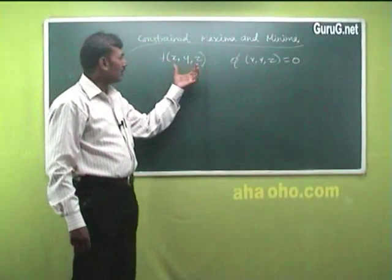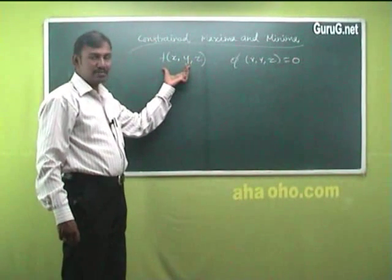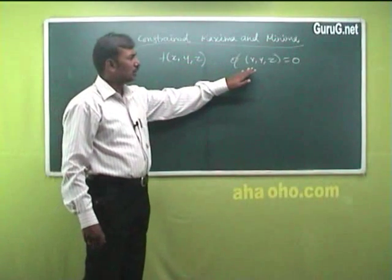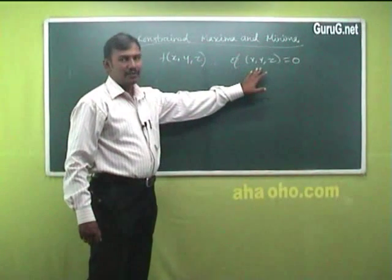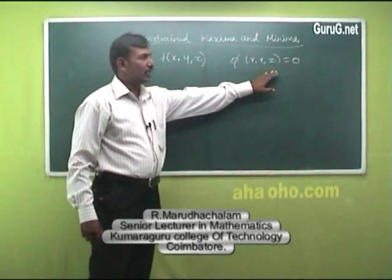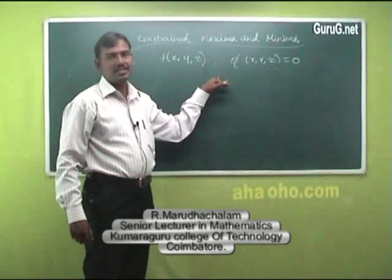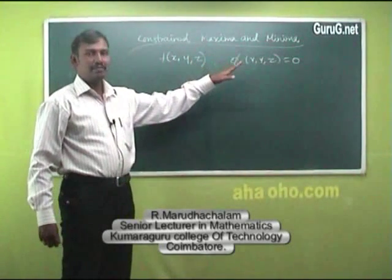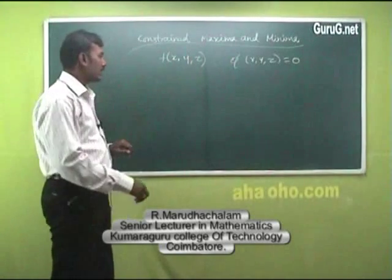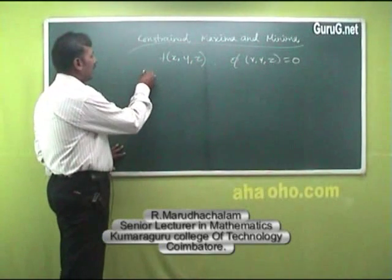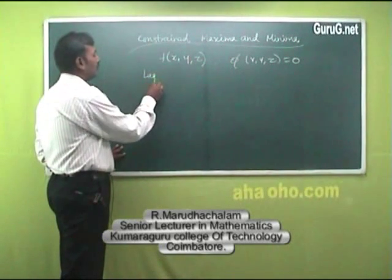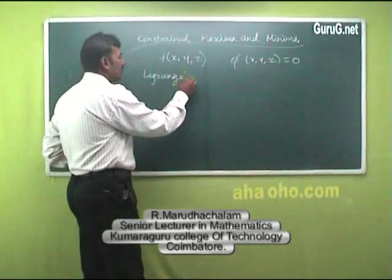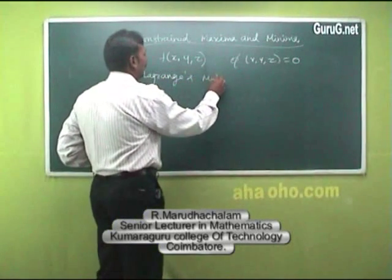For this condition, we find the maximum or minimum value of the function subject to the condition φ(x, y, z) = 0. This situation is called constrained maximum and minimum, and this type of problem can be solved by Lagrange's multiplier method.